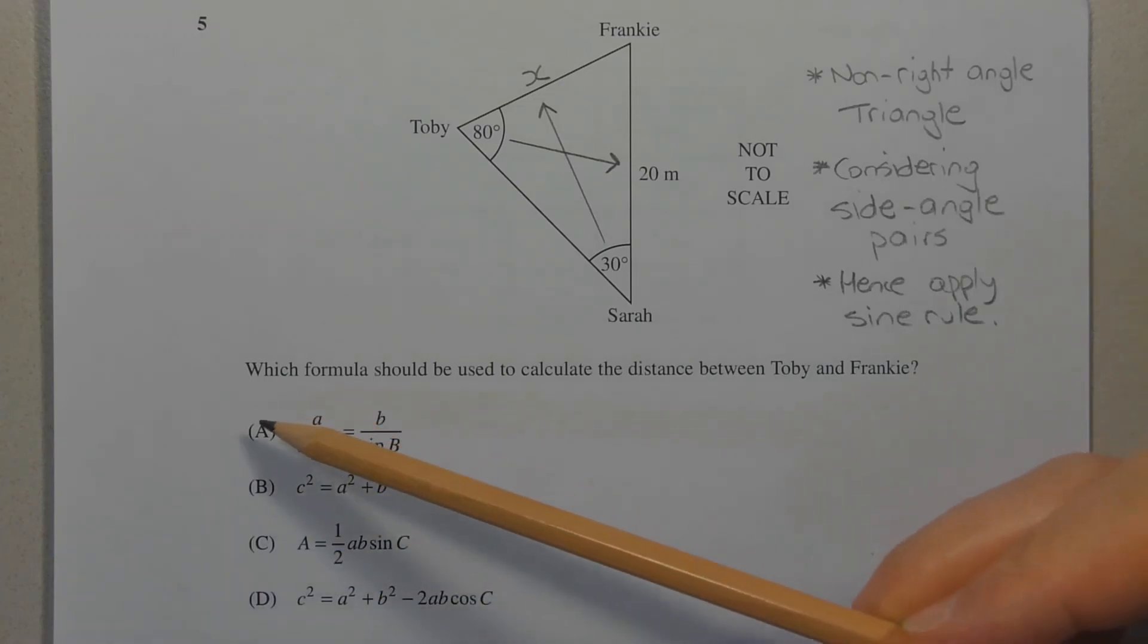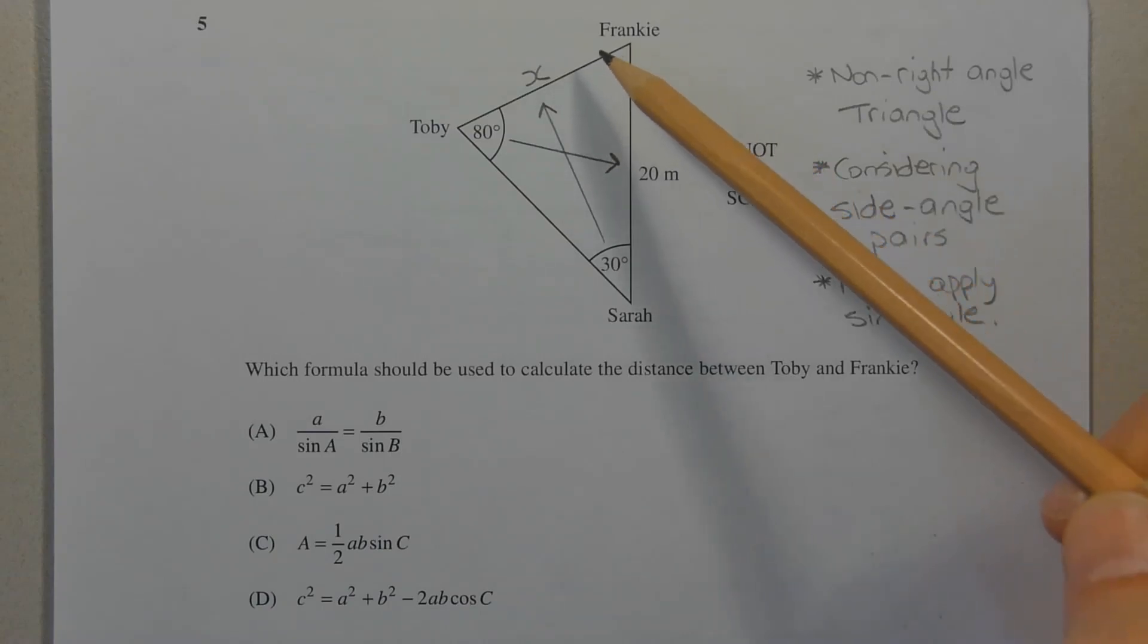So the answer could either be option A or option D. Now the question is asking for the distance between Toby and Frankie, so we want the length of this side of the triangle.